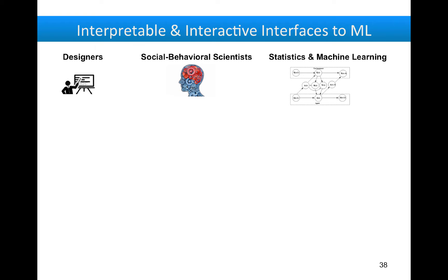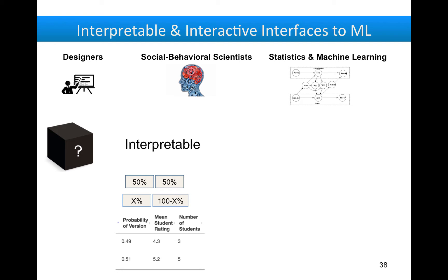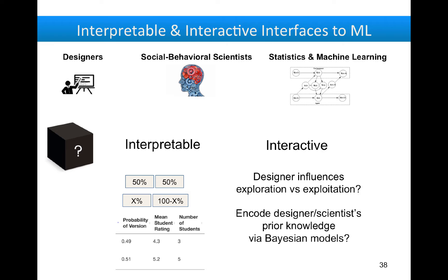To bring these different constituents together, I'm interested in exploring how we can build interpretable and interactive interfaces to machine learning. For example, how do we go beyond a black-box algorithm? Do designers find it more interpretable to understand a policy in terms of weighted randomization? Are there methods that can help social scientists know how to analyze their data? I think these systems will be more effective if they allow humans in the loop to interact with algorithms, such as letting a designer influence the exploration-exploitation trade-off, and there are other advantages to encoding designers' or scientists' prior knowledge, such as via Bayesian models.